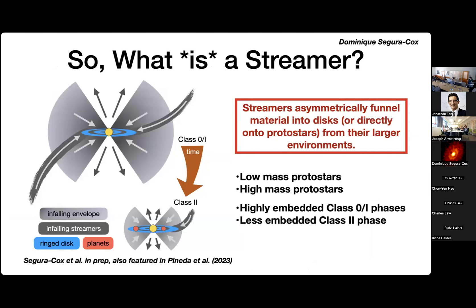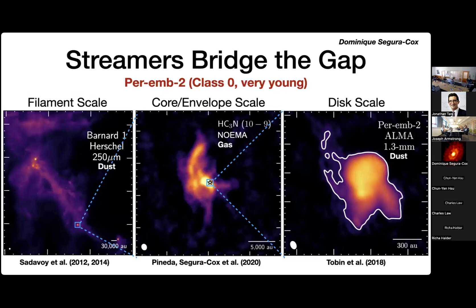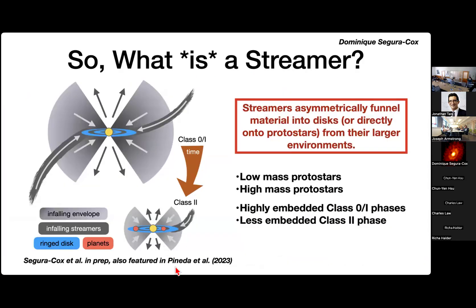So what is a streamer? My friend Jaime Pineda at Max Planck and I named these structures — asymmetric channels that funnel material onto disks or protostars from larger scales. That's all it is: just a tail. We've seen them mostly in low-mass protostars, which is most of what I do. There are a few papers suggesting they exist in high-mass protostars too, but those researchers have other things to deal with. We see them in both the youngest protostars — still surrounded by a very dense cocoon — and in older Class I sources where you can simultaneously have rings and streamers.